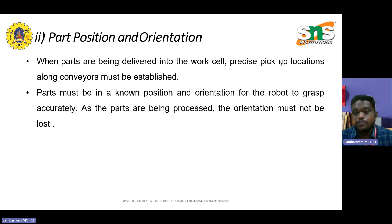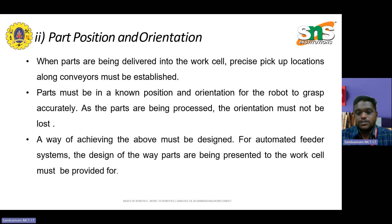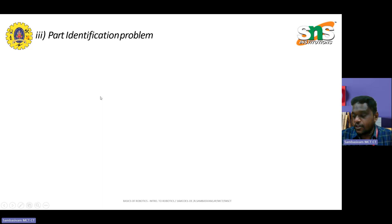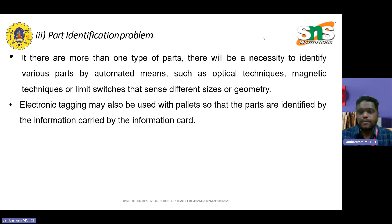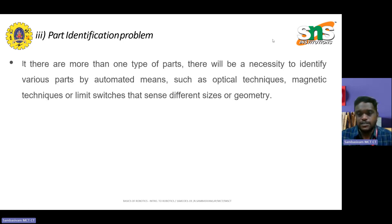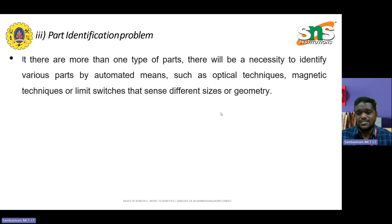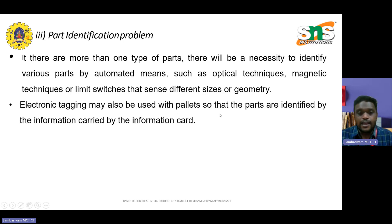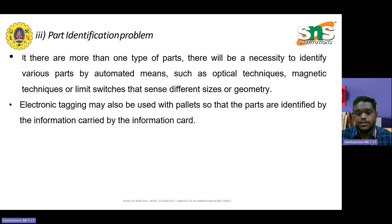All parts being processed must not lose their orientation. The way of achieving this must be designed using an automated feeder system. The design of how parts are presented to the work cell must be provided. Regarding the part identification problem: if there is more than one type of part, there will be a necessity to identify the various parts by automated means such as optimization techniques, manual techniques, or sensors that can sense different sizes and geometries. Ultra-sonic tagging may also be used so that parts are identified by information carried on an information card.